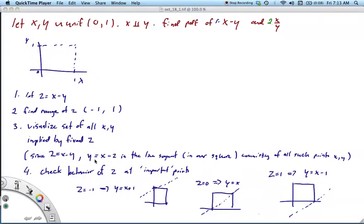Okay, now we want to visualize the set of all X, Y implied by some fixed Z. So we're given, or we've defined Z to be X minus Y. So basically, if we want to take a peek at what values of X and Y satisfy this equation, we could fix Z, solve this thing for Y, and we'd get Y equals X minus Z. And so this is just going to be some line segment, positive slope, right?